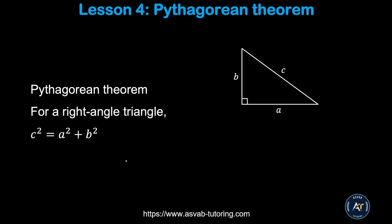The last thing we'll learn is the Pythagorean theorem. For a right triangle with sides a, b, and c, you can write a squared plus b squared equals c squared.